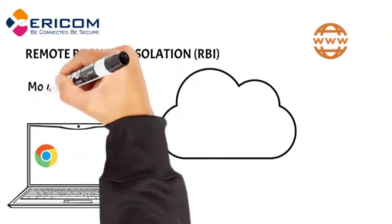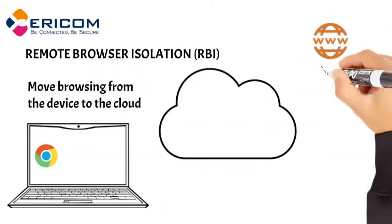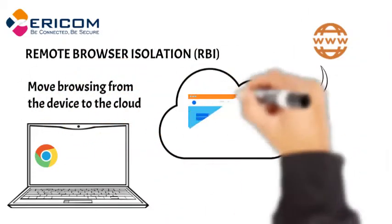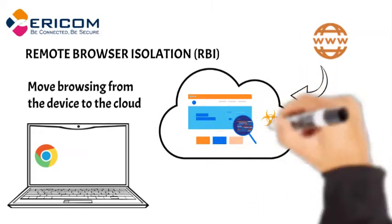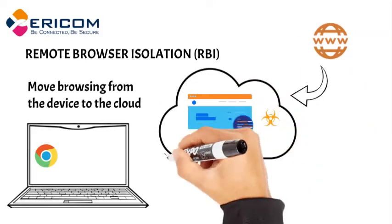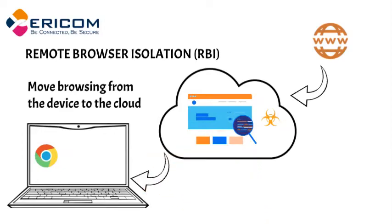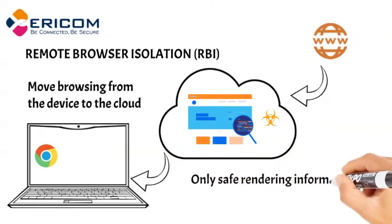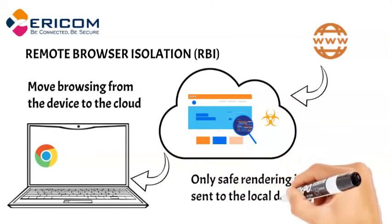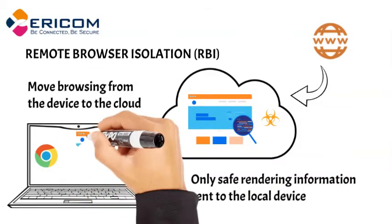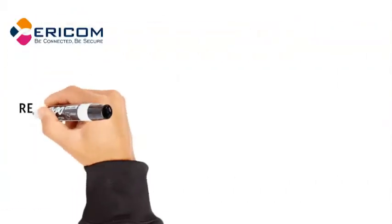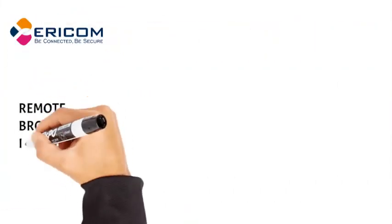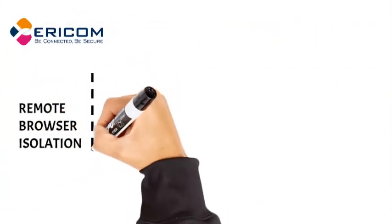Remote browser isolation prevents hidden web threats from compromising devices. The browser function — the rendering of the website code — is done in an isolated container. Any malware stays in the isolated container where it can do no harm. Only safe rendering information goes to the browser on the device: all of the access, none of the risk.